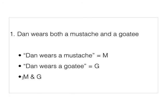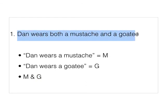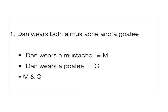So this says, literally, Dan wears a mustache and Dan wears a goatee, which captures our sentence 'Dan wears both a mustache and a goatee.' It's just a conjunction of these two atomic propositions.